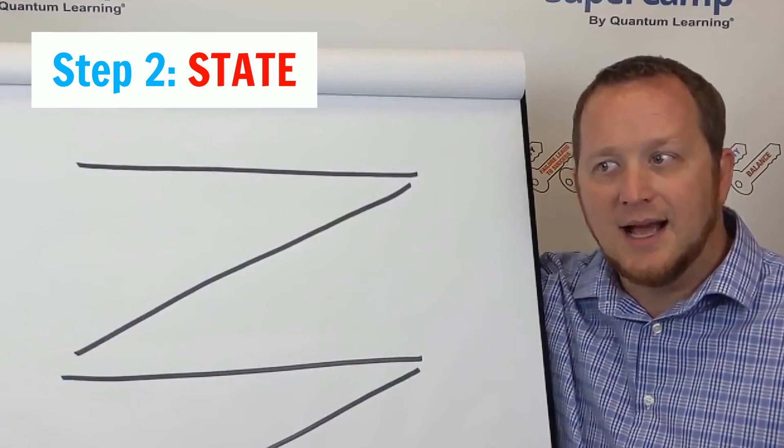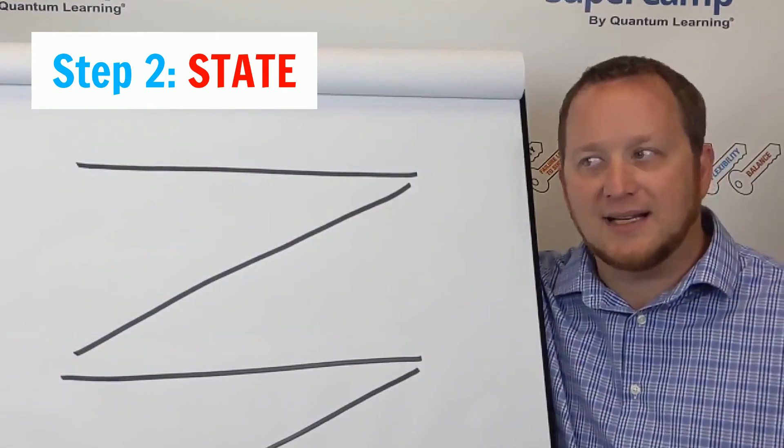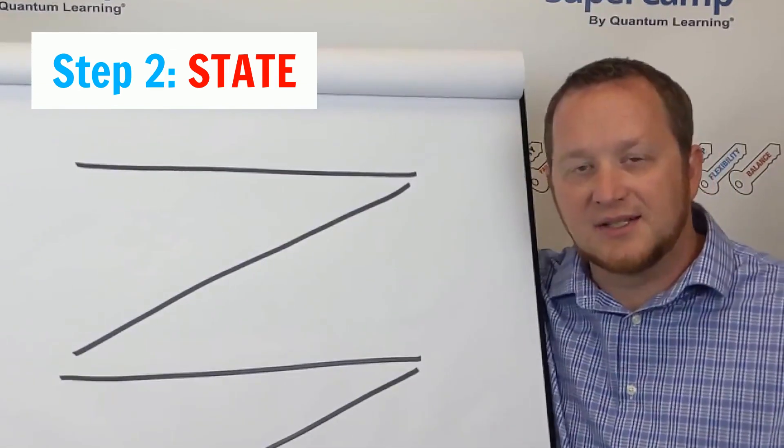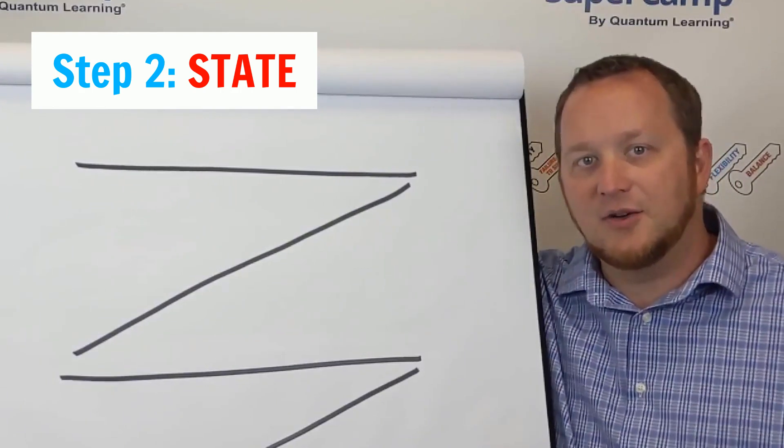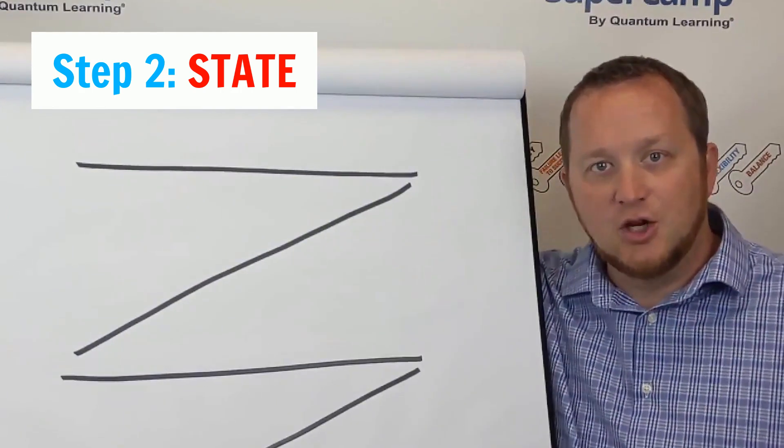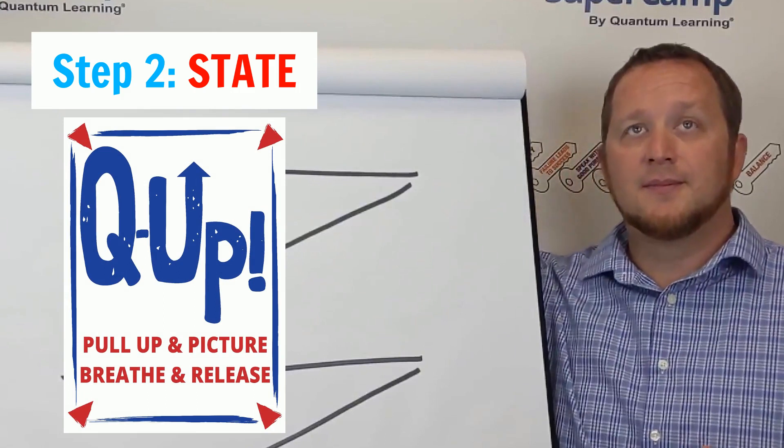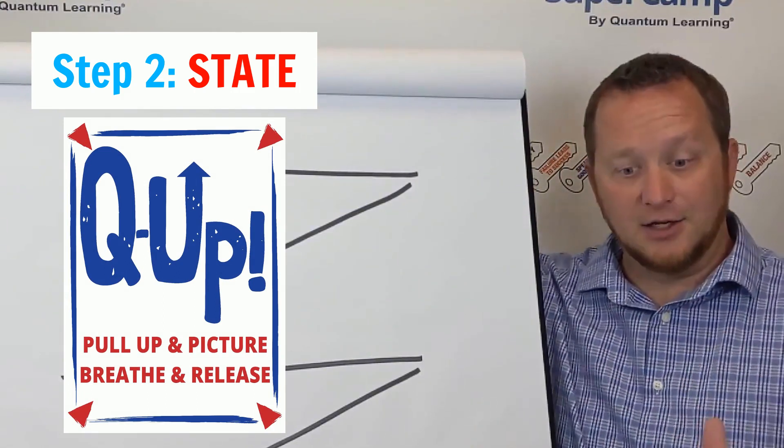Then I went into state. I would always get sidetracked. And now, if you can even see in this video, I'm looking around and everything else. I get sidetracked very quickly. So what I need to do is cue up, which is pull up a picture, breathe and release, and then go.